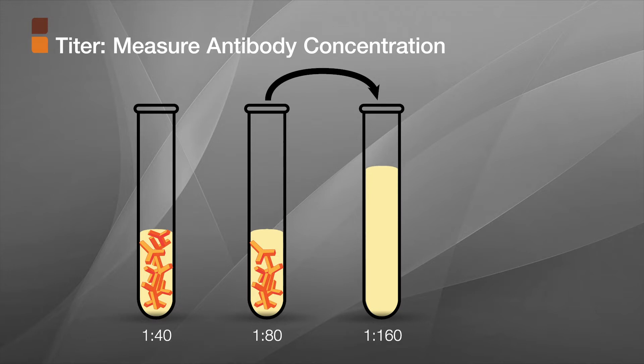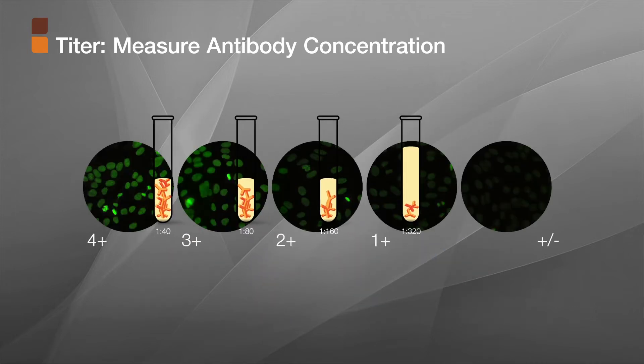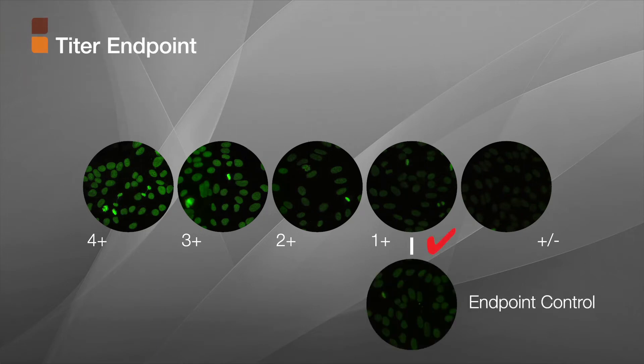Typically, to determine the titer, you perform a two-fold serial dilution of the patient's serum. As the antibody is diluted out, the intensity of the staining decreases. The highest dilution of serum that has a 1 plus or greater staining is called the endpoint titer.